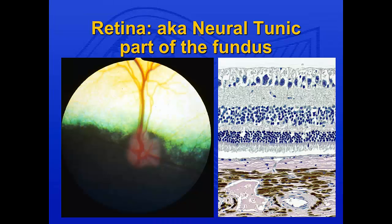I like to teach what normal is first before we get into the disease state — what is the retina, where does it come from, what does it entail. On this slide you can see on the left a beautiful normal dog retina. Dog retinas are very different across the board; you can look at six dogs and they will all look different. This dog I can tell you has relatively short hair, a dark hair coat, and is a large breed dog — just from this picture.